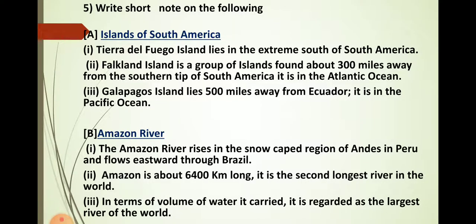Question number five is a short note question. The first short note is on the islands of South America. First: Tierra del Fuego Island lies in the extreme south of South America. Second: the Falkland Islands are a group of islands found about 300 miles away from the southern tip of South America, in the Atlantic Ocean. Third: the Galapagos Islands lie 500 miles away from Ecuador, in the Pacific Ocean.